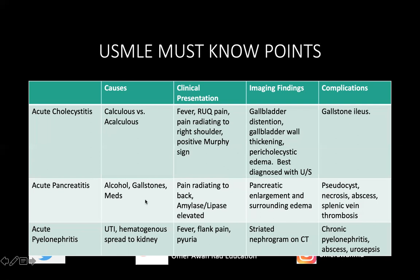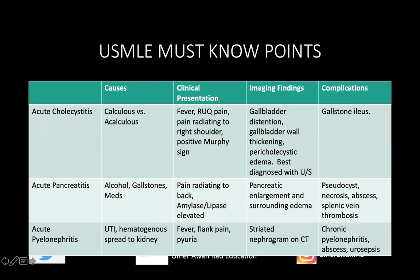Acute pancreatitis is caused by alcohol, gallstones, sulfa drugs, protease inhibitors, and steroids. It presents with pain radiating to the back, with elevated amylase and lipase — lipase being more specific. CT shows pancreatic enlargement with peripancreatic stranding; complications include pseudocyst, pancreatic necrosis, abscess, and splenic vein thrombosis. Acute pyelonephritis presents with fever, flank pain, and pyuria. CT shows a striated nephrogram with wedge-shaped dark areas along the kidney periphery. Complications include chronic pyelonephritis, renal abscess, and urosepsis.